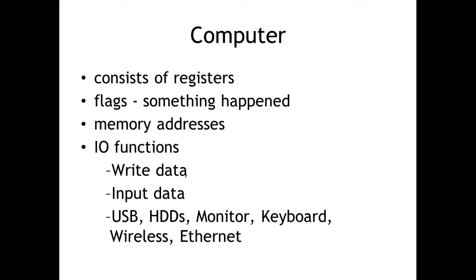As far as some more information about the organization of the computer: typically when you think about memory, you think about primary memory — your RAM — and you have 16 gigs or 8 gigs or something. That's volatile; when you shut your system down, whatever was stored in your RAM essentially goes away. We also have our secondary, persistent storage — something like a hard drive, whether solid state or spinning disk — where we expect data to stay even after shutdown. At the CPU level, we have a series of registers, and those really are what we're going to focus on throughout the next couple of lectures.